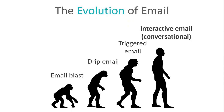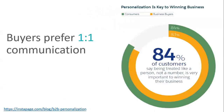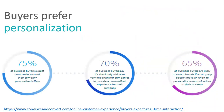Why is conversational email so important? First, buyers prefer one-to-one communication — 84 percent of buyers want to be treated like a person, not a number. When we're sending to thousands of leads, it's important to think of them as actual people, because that's what they're expecting. They expect something that really feels like you're reaching out specifically to them, not part of some campaign. Buyers also expect personalization — they want it to look like you did some research before you reached out. About two-thirds are willing to switch brands if they don't feel they're getting personalized communications.